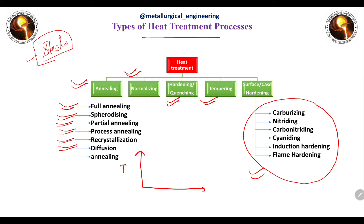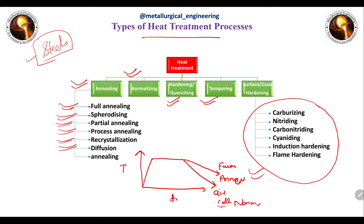When we differentiate between annealing, normalizing, and hardening, the key difference is the cooling rate. When a material is heated to a critical temperature and held for some time, cooling over a long period — that is, furnace cooling — is called annealing. If moderate cooling or air cooling is used, the process is called normalizing. For hardening, the material is suddenly quenched in water, oil, or brine solution. Note that the heating temperatures are also different for annealing, normalizing, and hardening.